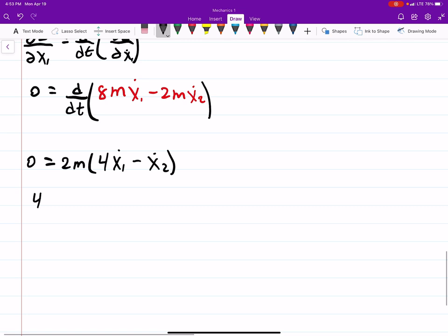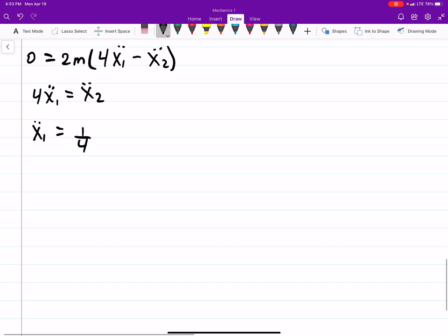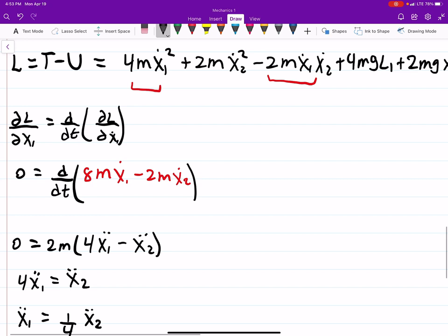Or if I just divide over, these should be double dot gotta take the time derivative. So 4x1 double dot equals x2 double dot, which tells us that x1 dot since that's what we're interested in placing it is equal to 1 4th x2 double dot. So what is x double dot? Well we have to find out and the good thing is we can use the Lagrangian for x2 to solve this.